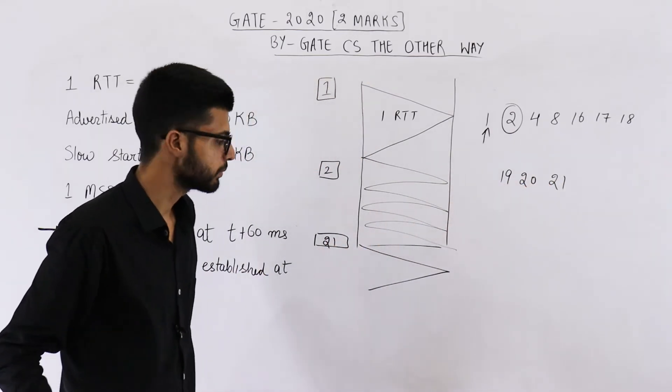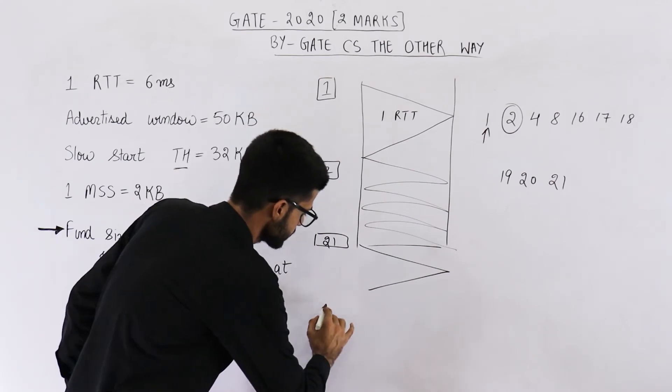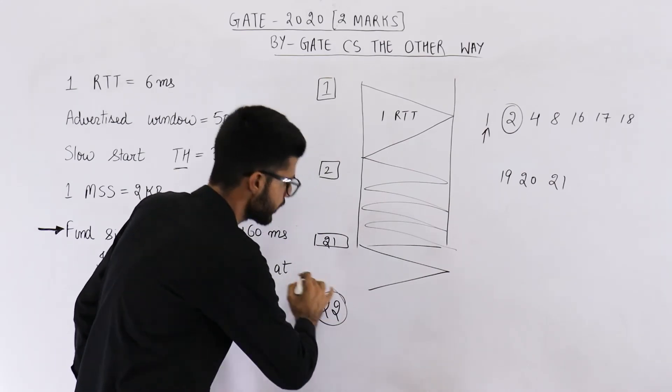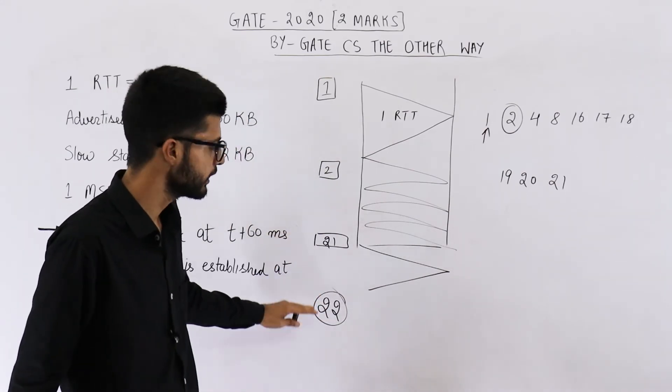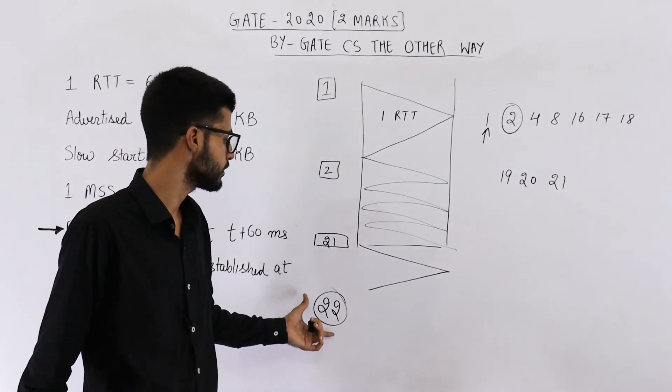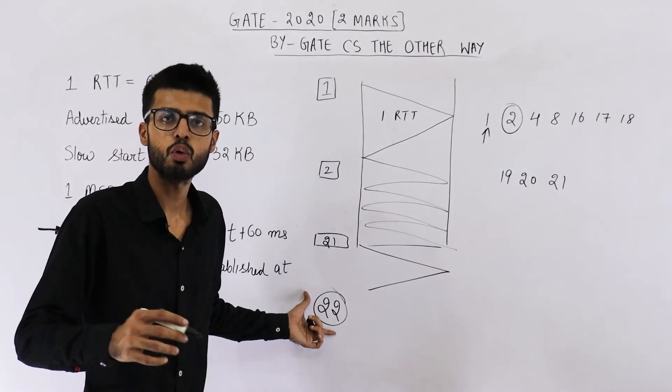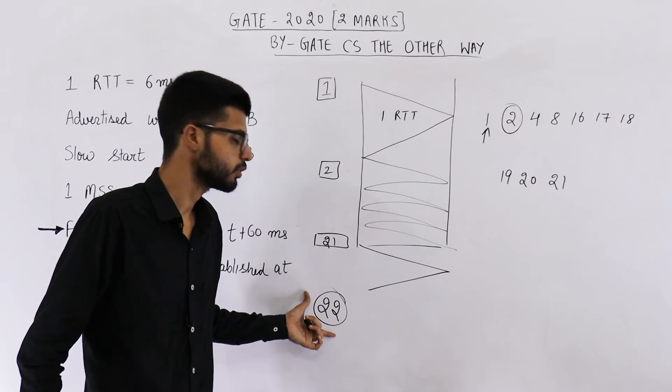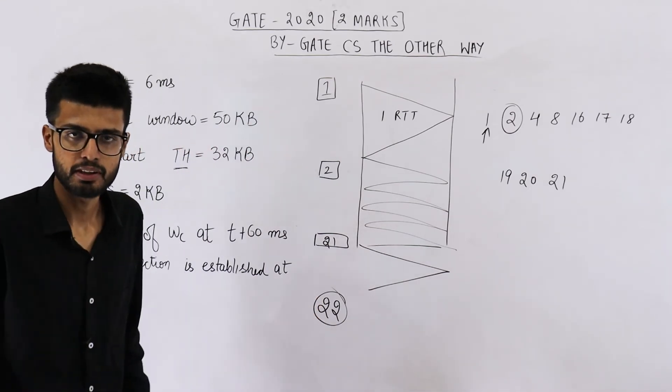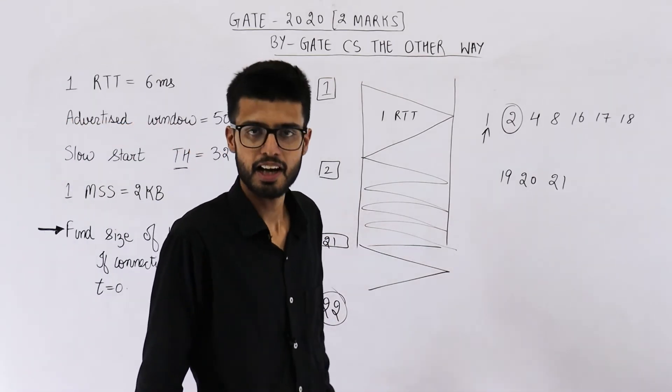But after completing this 10th RTT, the size will automatically become 22. Size will be increased by one. And we have already seen this means 44 KBs. So answer is 22 RTTs or 44 KB. Thank you very much for watching this video. Have a good day.